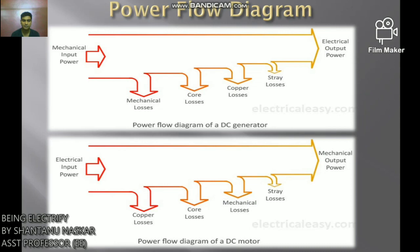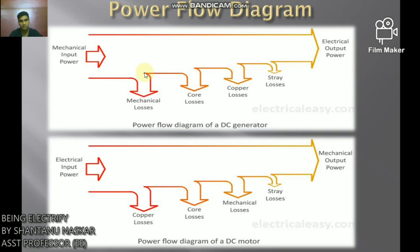The power flow diagram is the most convenient method to understand losses in a DC generator or DC motor. The diagram visualizes the amount of power lost in various types of losses and the amount actually converted to output. For a DC generator: mechanical power is the input, then mechanical losses occur, then core losses, then copper losses, then stray losses, and the output is electrical power. For a DC motor: electrical power is the input, then copper loss, core loss, mechanical loss, stray loss occur, and the output is mechanical power.